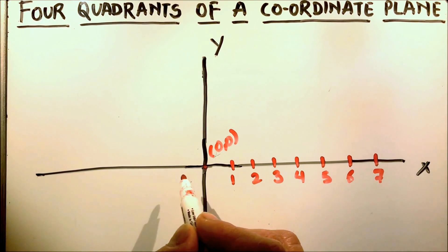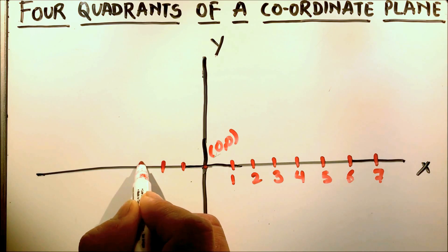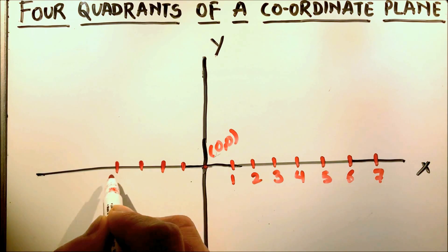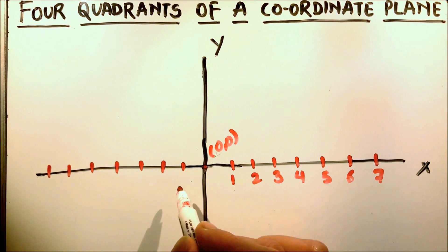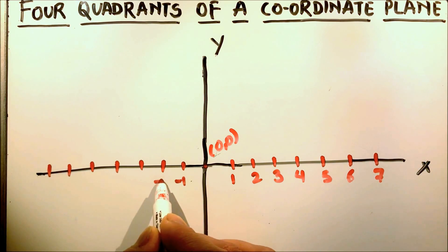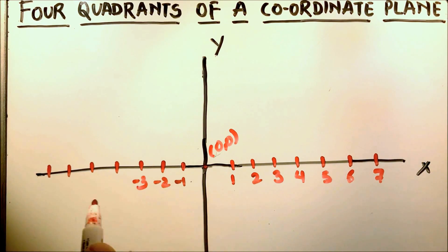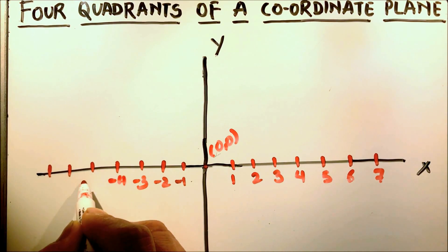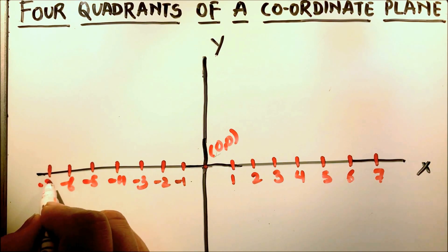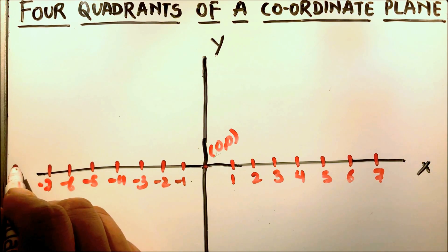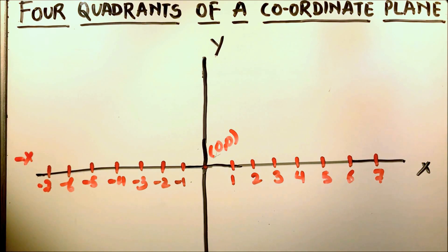While on the left-hand side, when we go in the negative direction, the numbers are decreasing: minus 1, minus 2, minus 3, minus 4, minus 5, minus 6, and minus 7. This is called the minus x-axis.